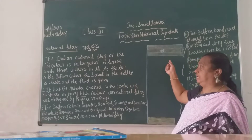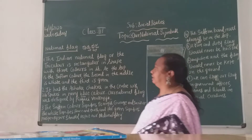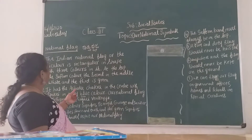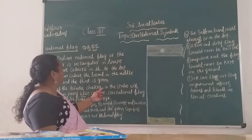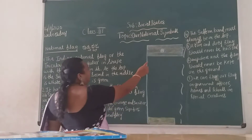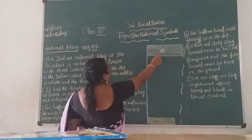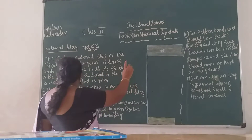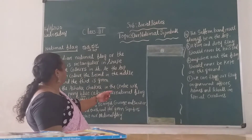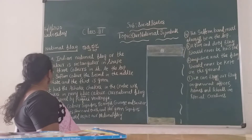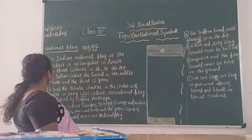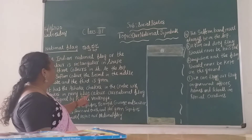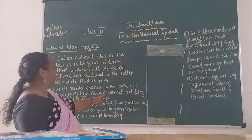This is our national flag. It has the Ashoka Chakra in the center. What is in the center children? Ashoka Chakra. It has the Ashoka Chakra in the center with 24 spokes in navy blue color.